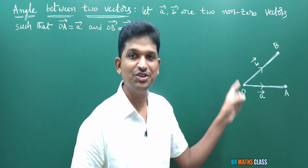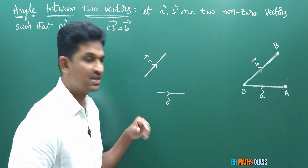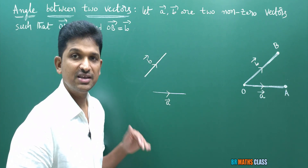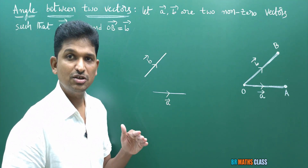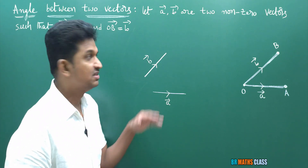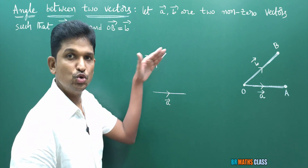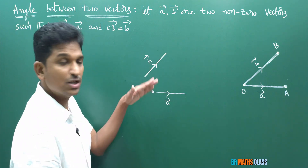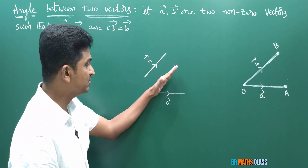I consider two non-zero vectors a-bar, b-bar like this — this is vector a-bar, this is vector b-bar. In vector algebra, whatever vectors we are dealing with, they are all free vectors. These vectors are free from their position in space. You can move these vectors by choosing an arbitrary initial point. Without changing the direction of this vector, I can move this vector to here.